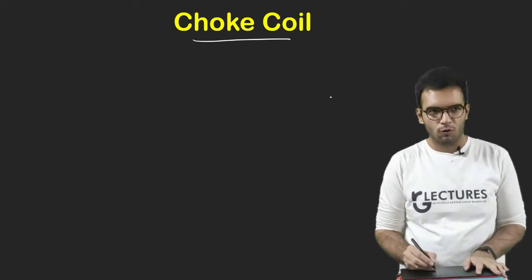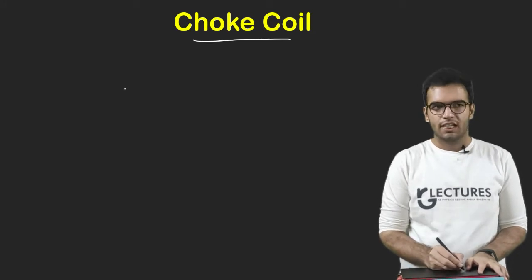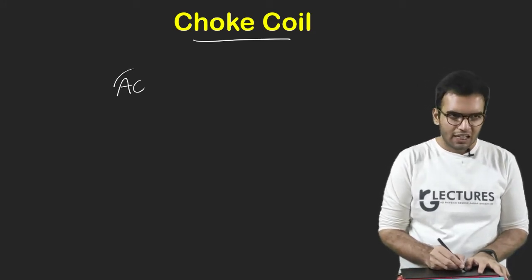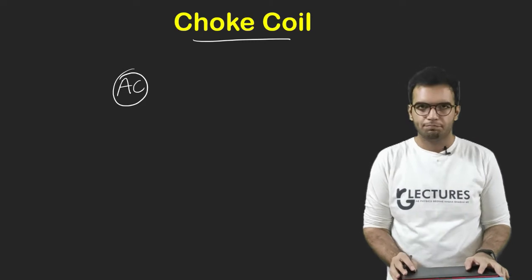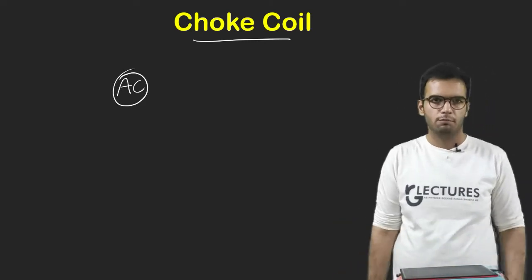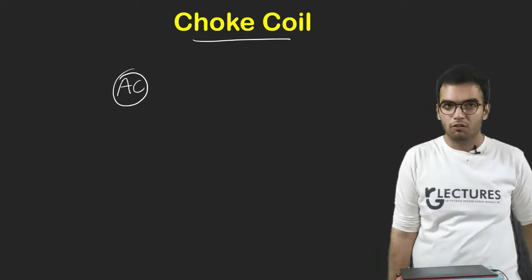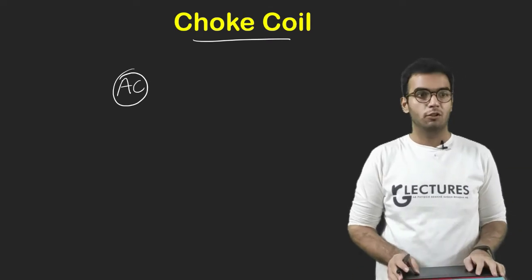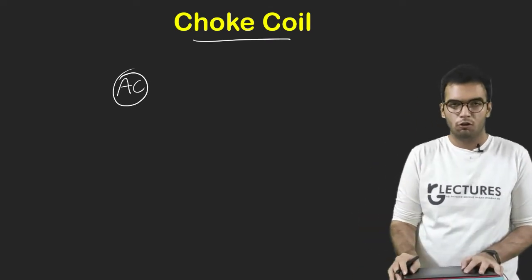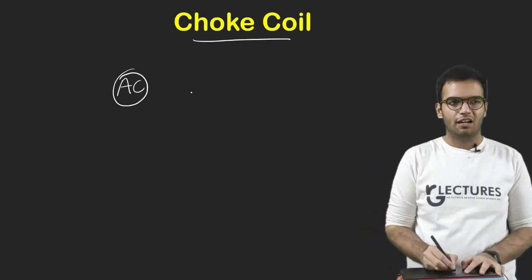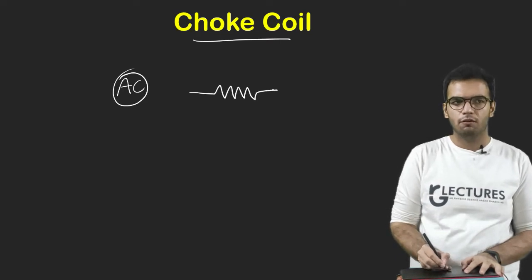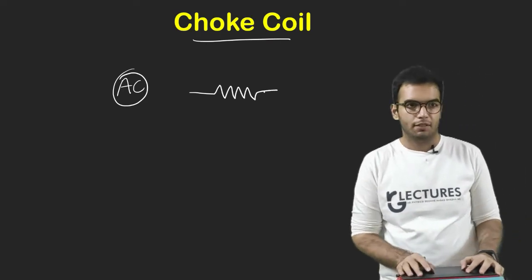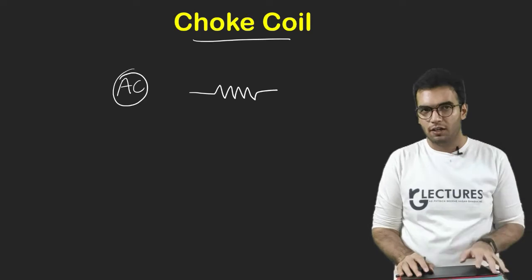So what is a Choke Coil? Now tube light is directly connected to AC source. There is no transformer. AC voltage is fluctuating, and we do not want so much voltage in the tube light. So we connect a resistor in series with our tube light.